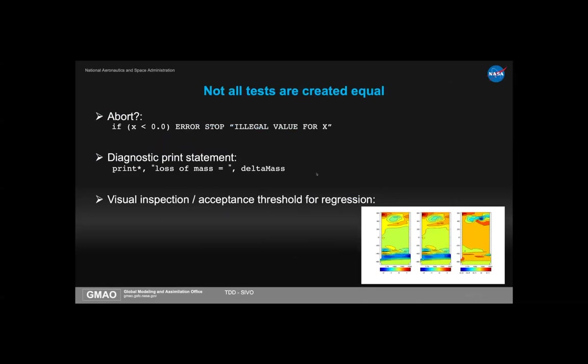There are lots of things in the world that are software tests, but they're not all created equal. One common approach in Fortran groups is to put a condition in the code and, if violated, stop the code with a loud error message. This tells us when the condition is violated, but stops everything — we can't test anything else after that. Another approach is a print statement, such as checking that delta mass stays small. The problem is it gets lost in the noise, and may be deleted once someone thinks the problem is solved.